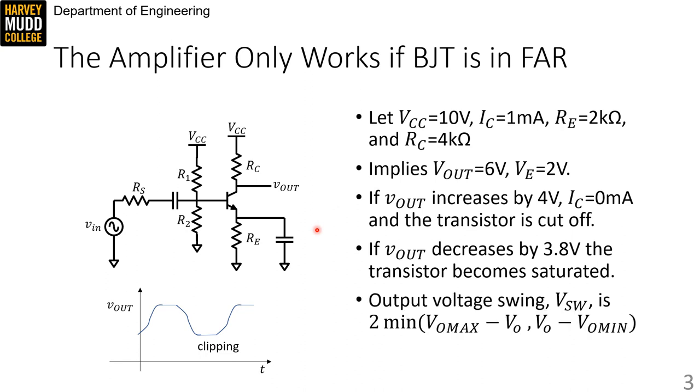We can summarize these two behaviors by defining a new amplifier design specification called the output voltage swing, or VSW. The swing depends on the large signal output voltage and its distance from both the maximum and minimum large signal output voltages. Specifically, the voltage swing captures the peak-to-peak size of the largest wave you could have at your output without leaving forward active. That peak-to-peak size is given by twice the distance from the large signal output voltage to the closer of VO_MAX or VO_MIN.